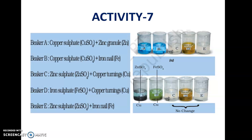Now put some zinc powder in beaker A, iron powder in beaker B, copper in beaker C, copper in beaker D, and iron in beaker E. Now see the color of beaker A — the liquid or solution changes. It becomes transparent. In beaker B the color also changes, but there is no change in color in beakers C, D, and E.